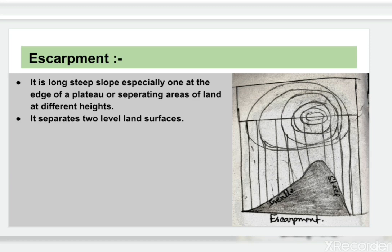The last landform seen in the topographical map is an escarpment. It is a long steep slope, especially one at the edge of a plateau or separating areas of land at different heights. It separates two level land surfaces. As you can see in the diagram, one side of the landform is a gentle slope and the other side is a steep slope.